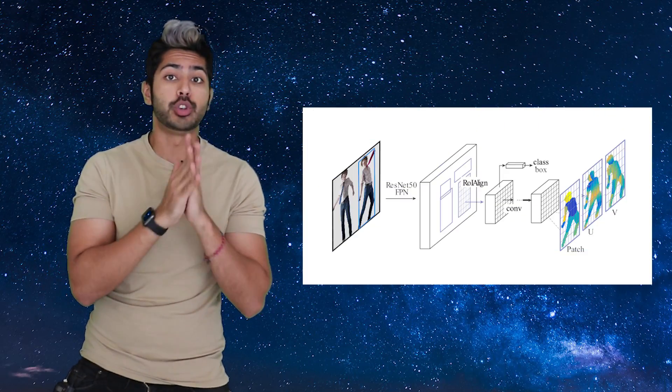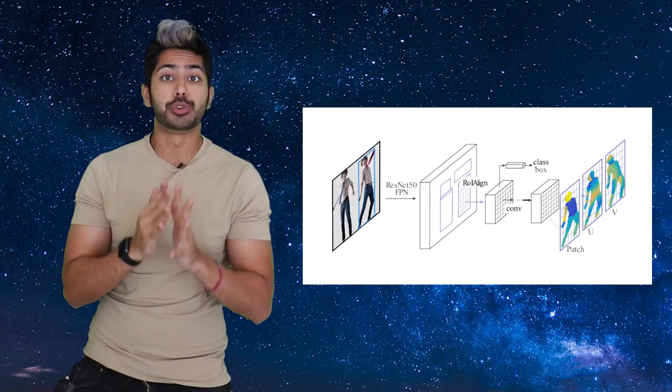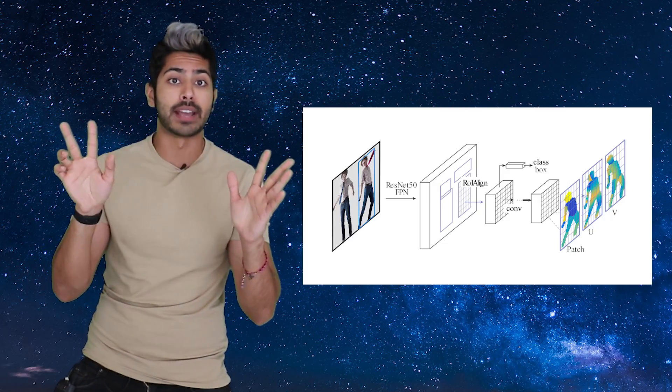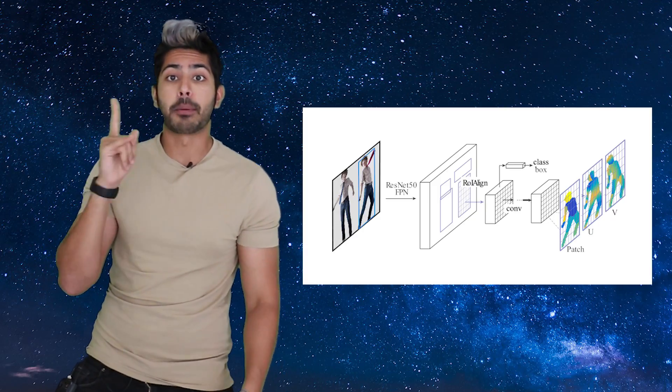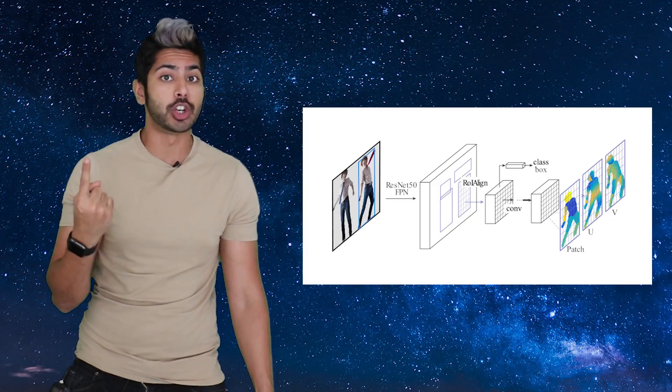So it's a fully convolutional network on top of region of interest pooling that is entirely devoted to two tasks: generating a classification and regression head that provide part assignment and part coordinate predictions.